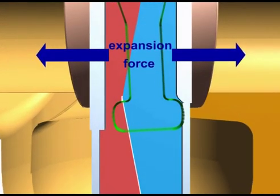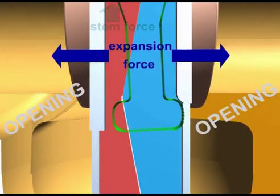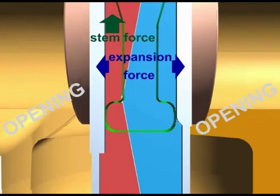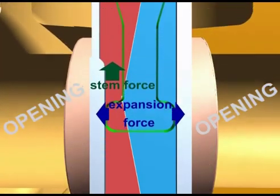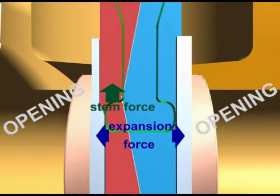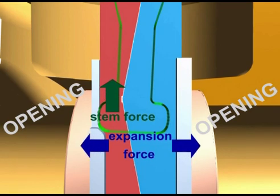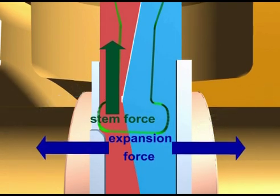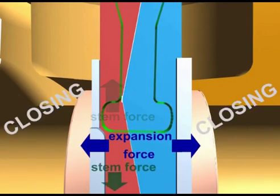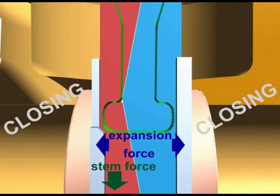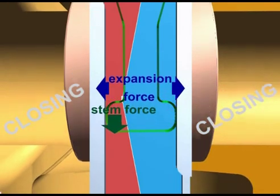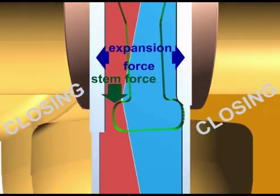During the stroke of the gate, the friction on the seats is reduced to the minimum. When the male half stops at the end of its travel, the female half, driven by the thrust of the stem, is forced against the male half on one side and the seat on the other. As a result of the expansion of the two halves of the gate, we obtain the necessary mechanical seal.